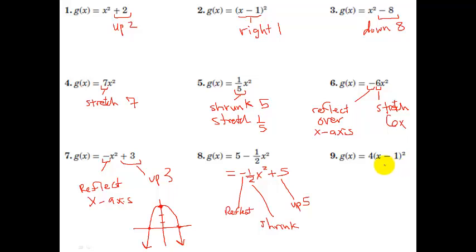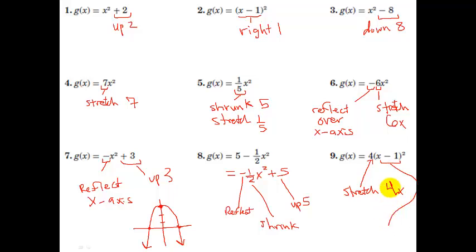The last example has a coefficient of 4 in front — a stretch factor — and x is replaced by x minus 1. The coefficient means stretch by a factor of 4. Because of the minus sign in (x − 1), we moved to the right by one unit. Being able to identify what's happening is the biggest part of the challenge. Now let's look at what some of these graphs look like and match them.